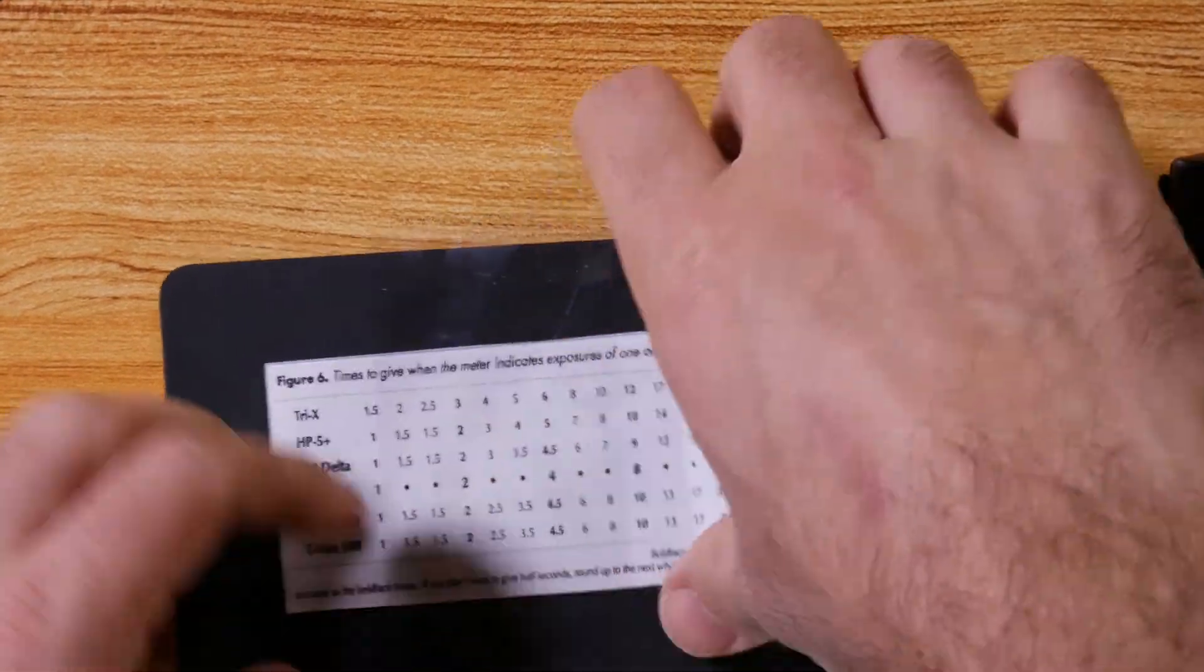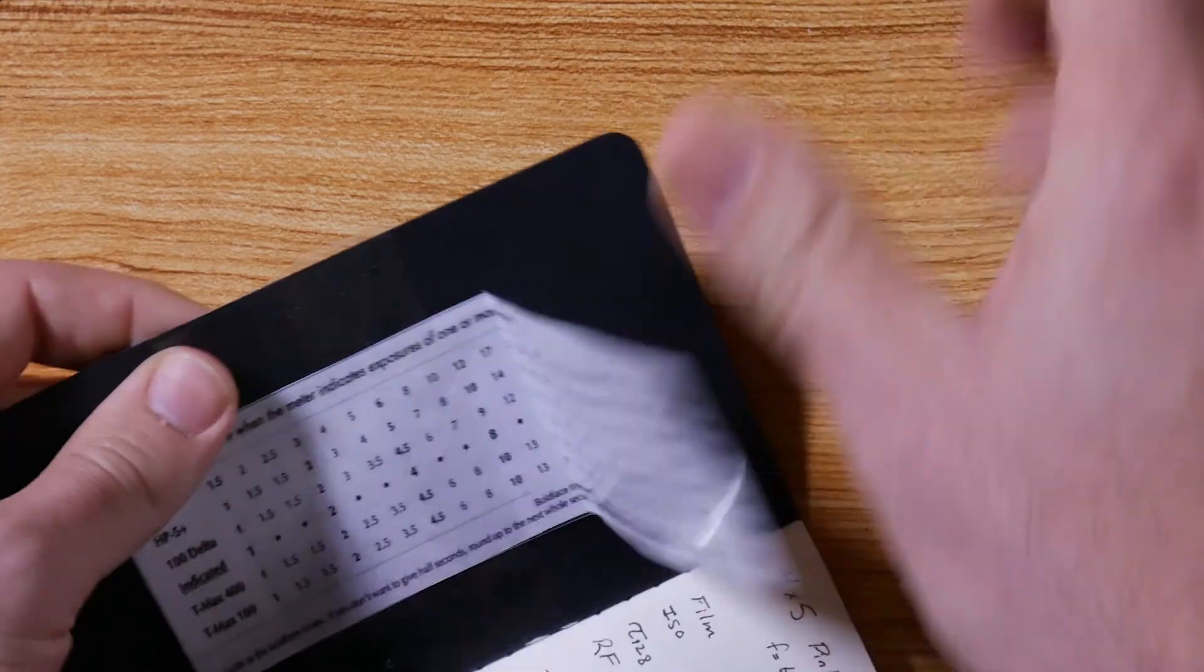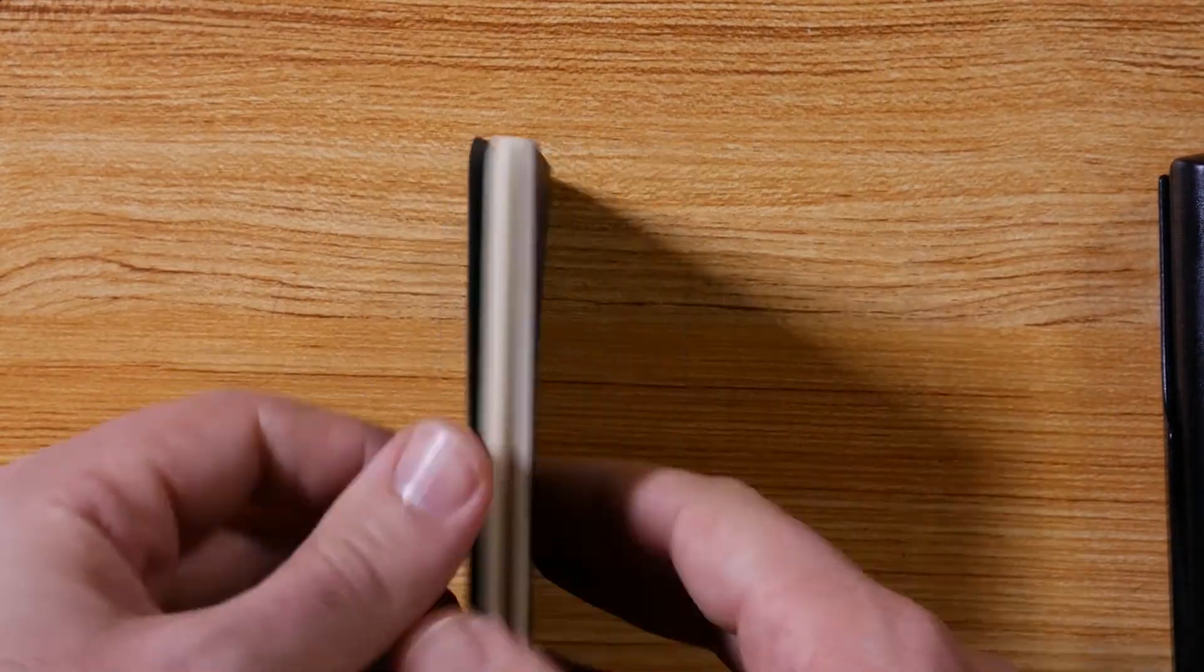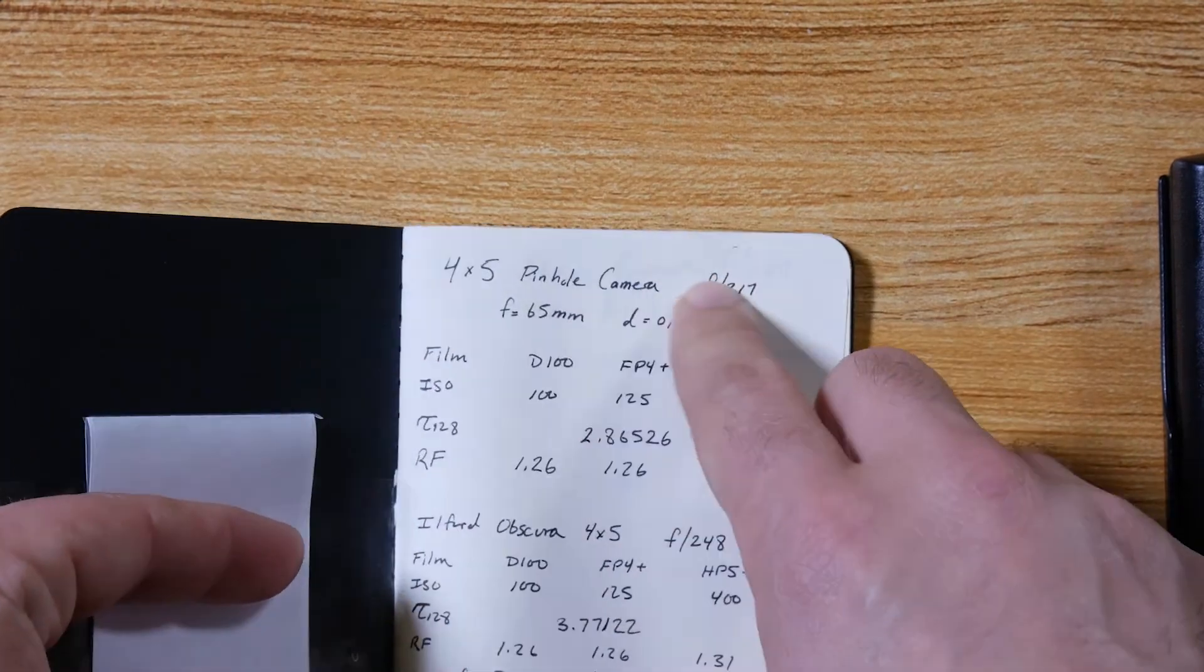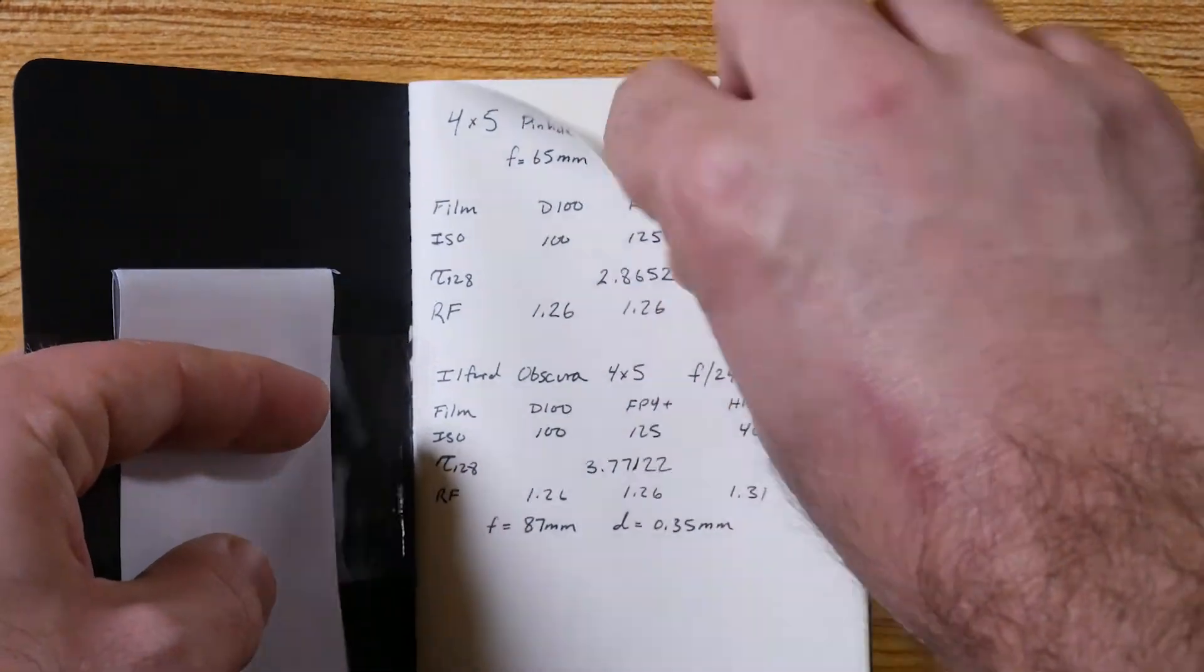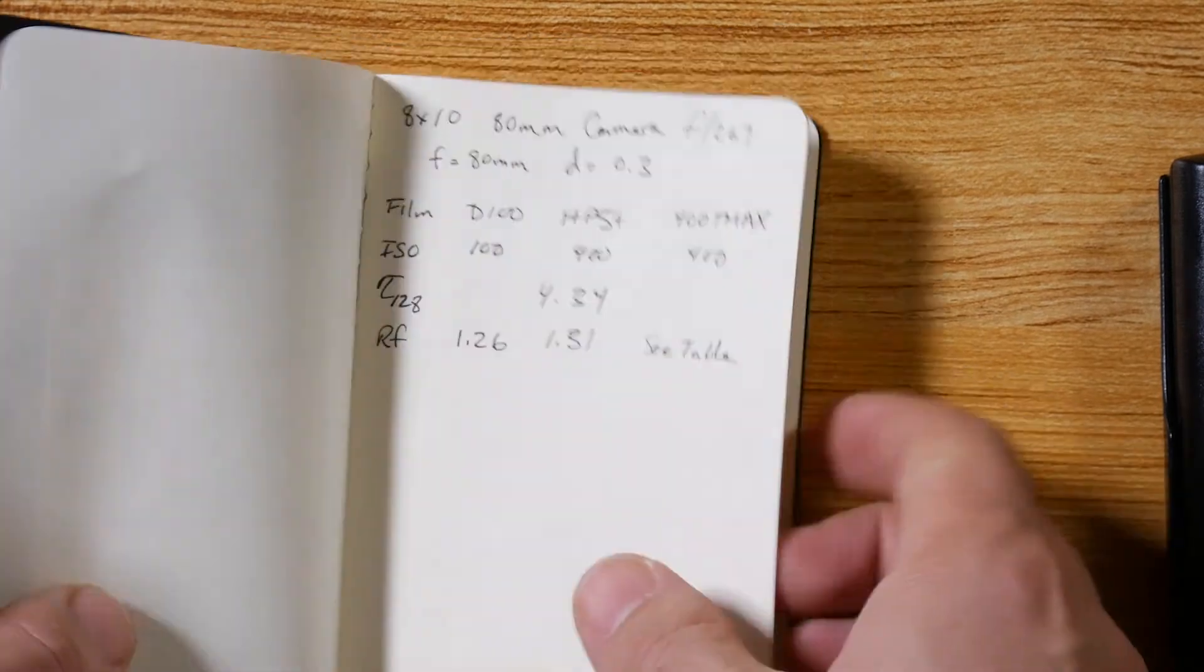Fold it in, close it up. Now I got my field notes, I can reference this table, and now I have a table for my 4x5, my Ilford 4x5, and my 8x10 camera.